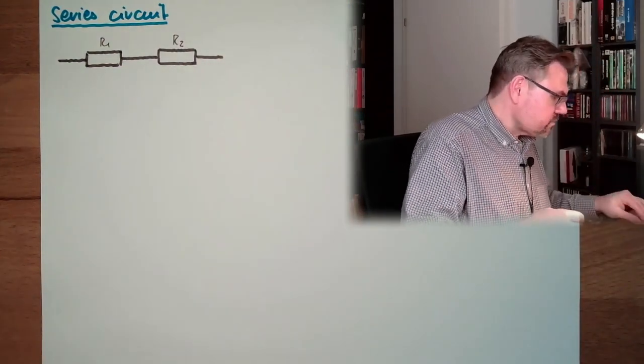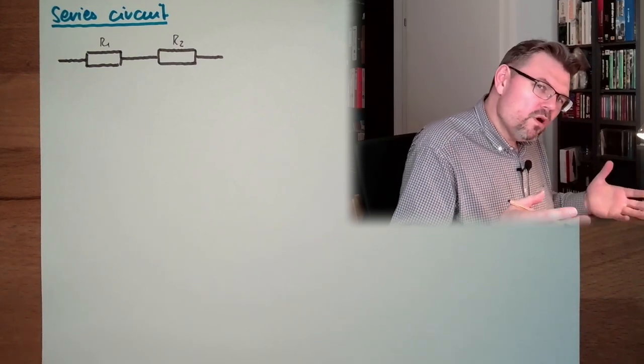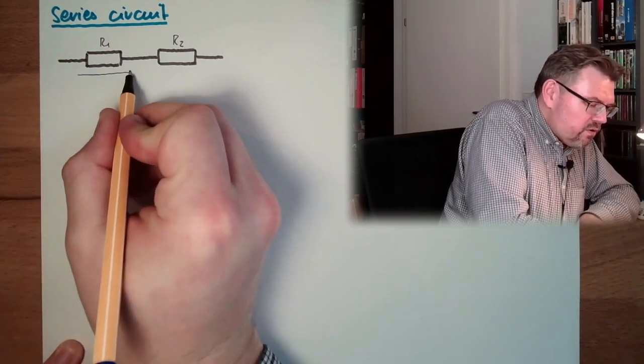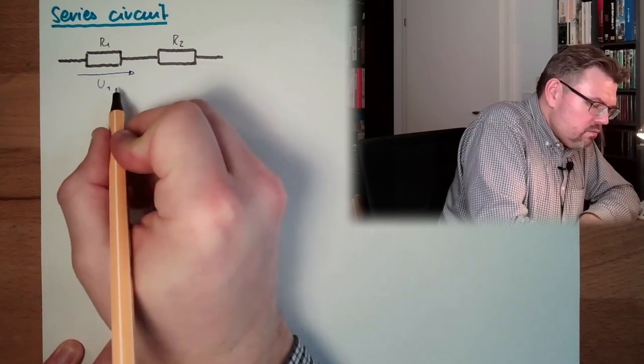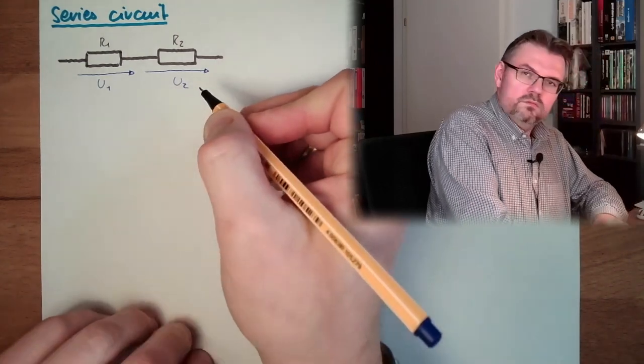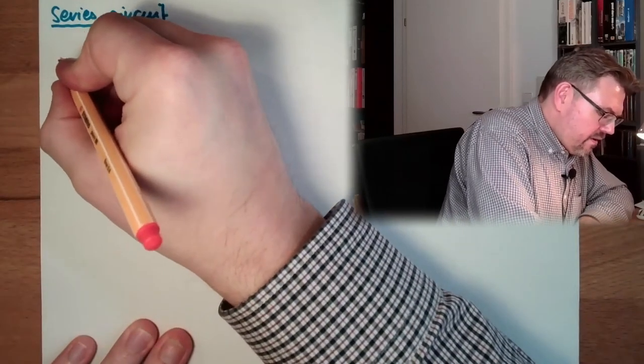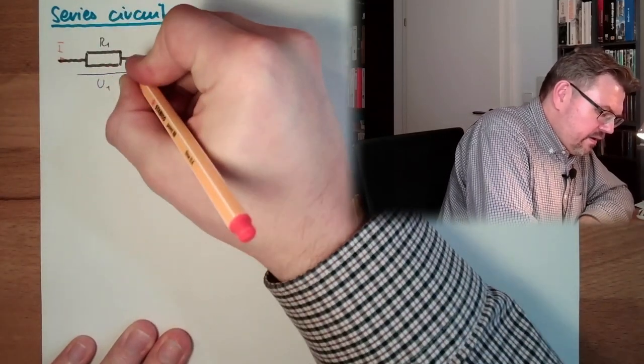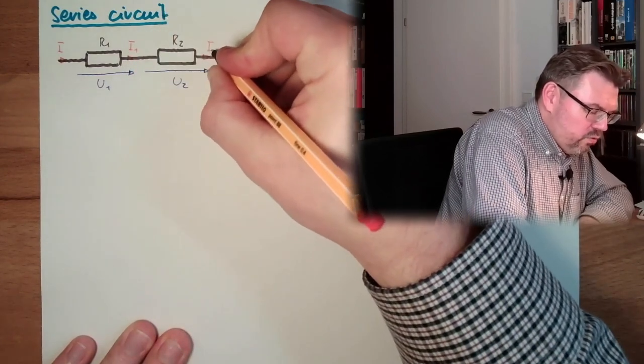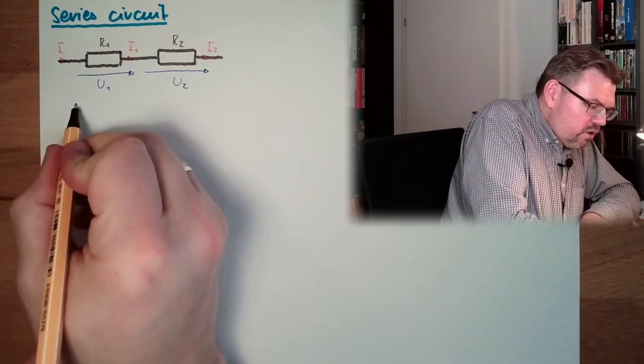We can select voltages, currents and so on however we like. So at R1, we have a certain voltage U1, and here we have a certain voltage U2. And exactly the same, here we have current I, and at R1 we have I1, and at R2 we have I2. At the series connection, we have a total voltage of U.